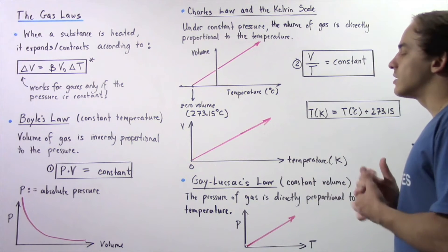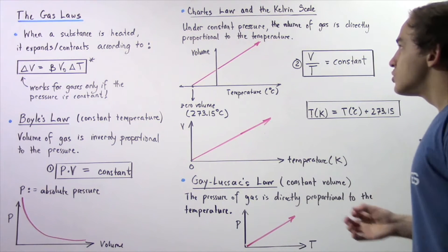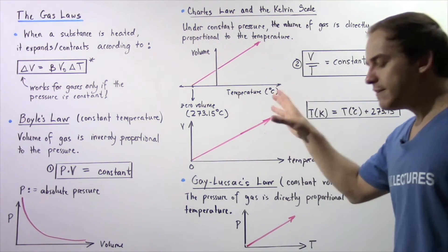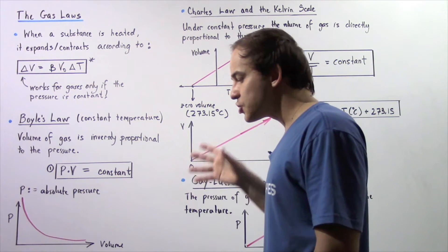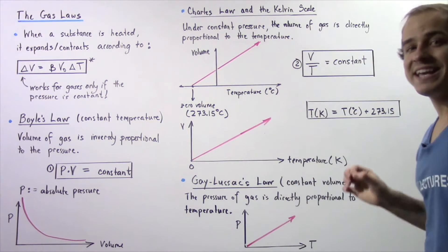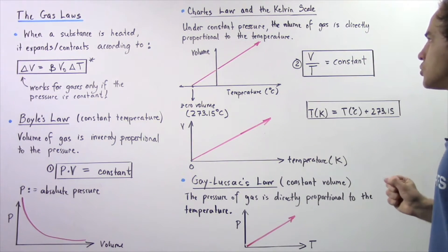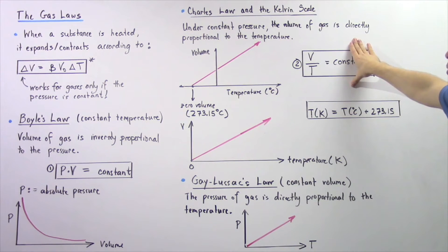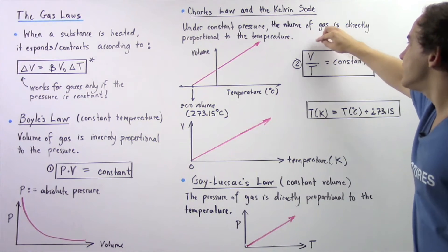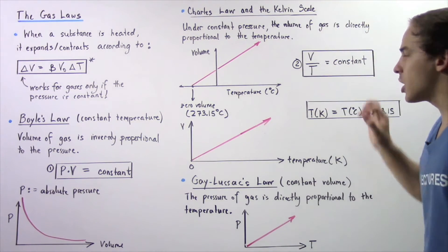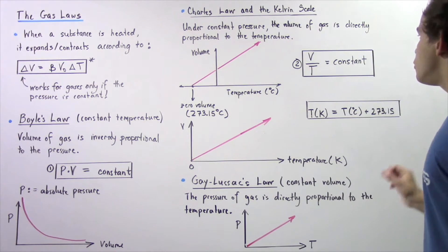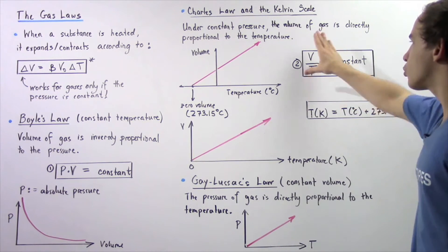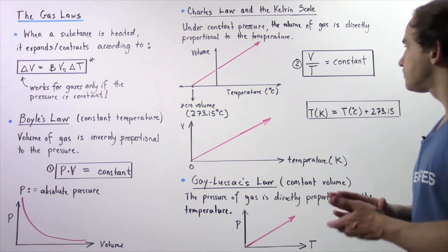Let's move on to the second law, which is known as Charles' Law. Charles' Law makes the assumption that our pressure is constant. If the pressure is constant and not too high, the volume of the gaseous system is directly proportional to the temperature. That relationship is given by the following equation, which states that the ratio of the volume to the temperature of our gaseous system is equal to a constant. So if we double the volume, we must double the temperature so that the ratio remains constant.